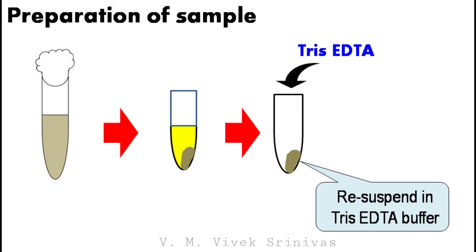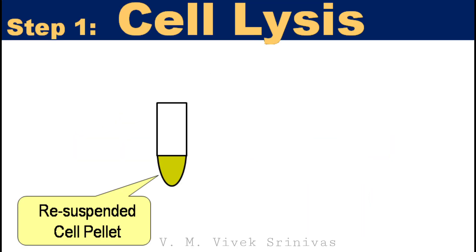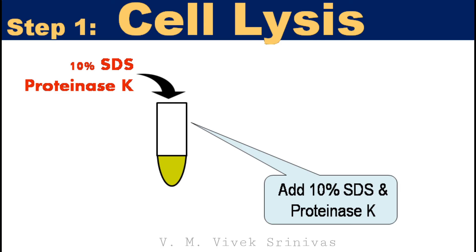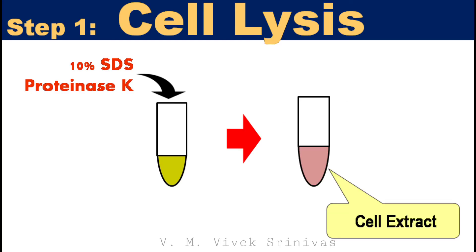This cell pellet is resuspended in 900 microliters of Tris-EDTA buffer by gentle mixing. Step 1 is cell lysis: 100 microliters of 10% SDS and 5 microliters of proteinase K are added to the resuspended sample. SDS is a detergent used to break the cell membrane. Proteinase K enzyme is used to degrade the proteins in the disrupted cell extract. This mixture is mixed well and incubated at 37 degrees Celsius for 1 hour for cell lysis.